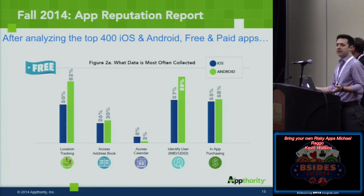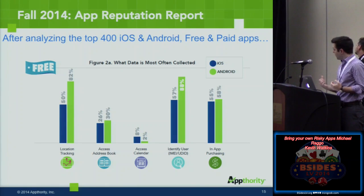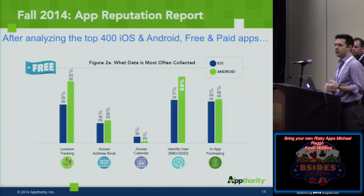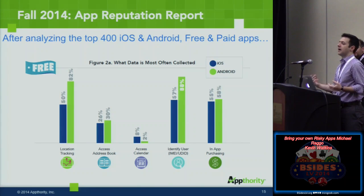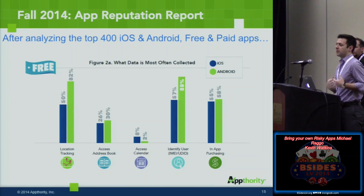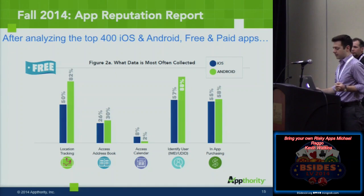Calendar access is actually the only thing that decreased year over year. We saw LinkedIn get in trouble for accessing calendars without notifying users on iOS — they were taking meeting minutes, call-in information, any attachments, and data mining confidential information. iOS 7 now requires permission to use the calendar, but many enterprise users will grant permission to anything — they just click OK.